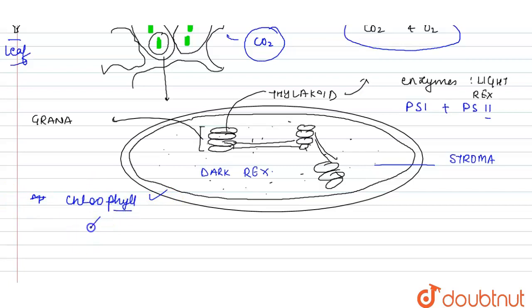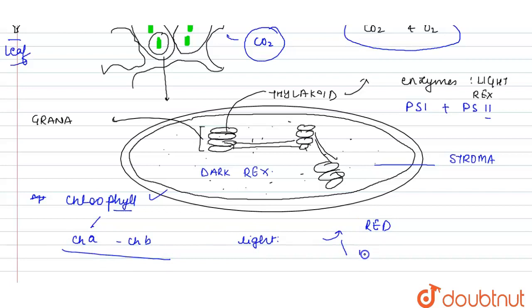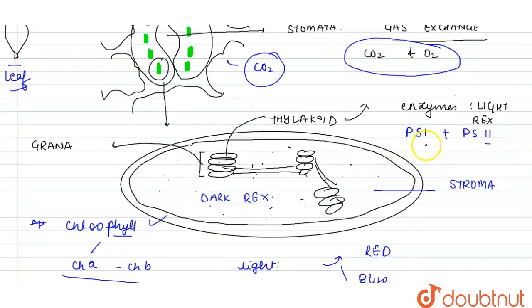In the chloroplast, chlorophyll is present. Chlorophyll is of two types: chlorophyll A and chlorophyll B. These help in the absorption of light, especially the red and blue light, where the rate of photosynthesis increases.